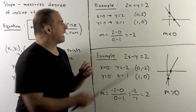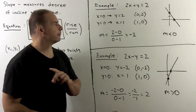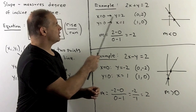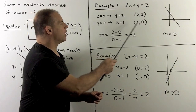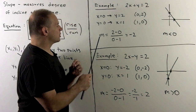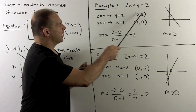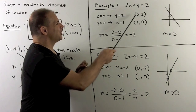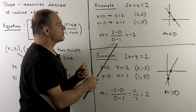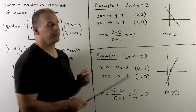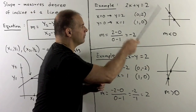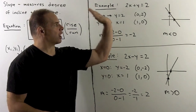We consider the line 2x plus y equals 2 in standard form. I find the intercepts by setting x equal to 0 and y equal to 0; these give the points (0, 2) and (1, 0). I plot the points and draw the line. Computing the slope: change in y is 2 minus 0, change in x is 0 minus 1, giving 2 over minus 1, which is minus 2. When the slope is negative, the slant goes in this direction.